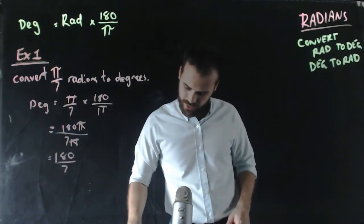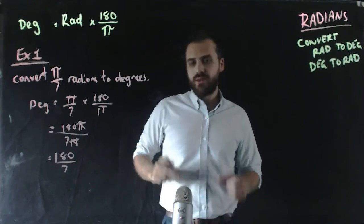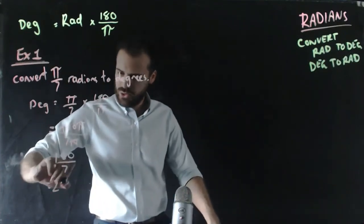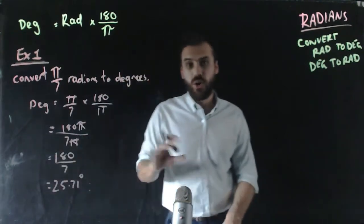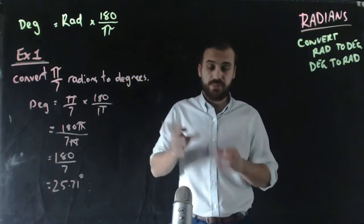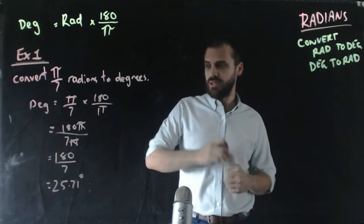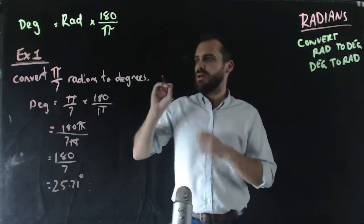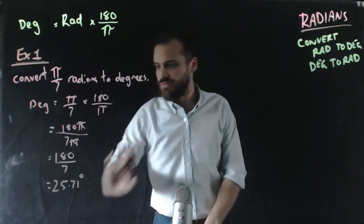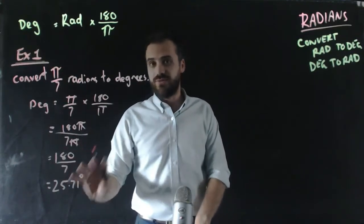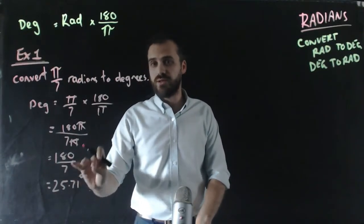If I type that into my calculator, that comes to approximately 25.71 degrees. Obviously, I can convert that to degrees, minutes, and seconds if I want. So what does this mean? When we converted π/7 radians to degrees, we found that was 25.71 degrees.